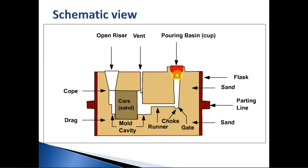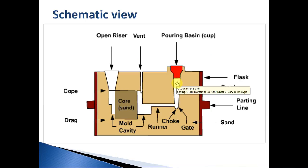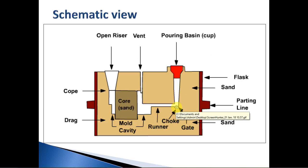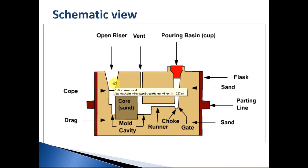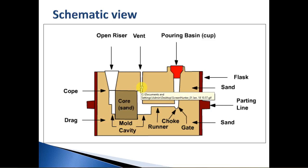The diagram in this slide shows a schematic view of the sand casting process. The molten metal is poured from the pouring basin and travels down the sprue into the choke where impurities are filtered out. The molten metal then reaches the mold cavity through runners. Risers play a very important role by providing sufficient molten metal to the cavity when solidification starts to happen. The vents allow gases to escape, which otherwise may lead to porosity defects.